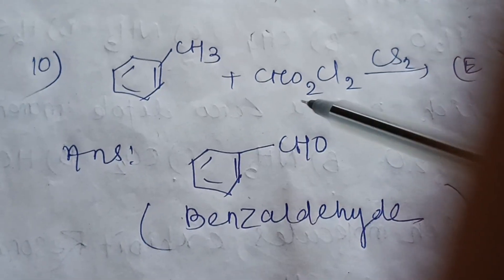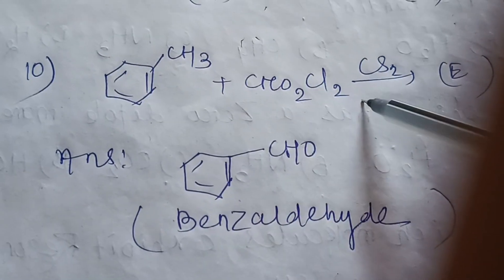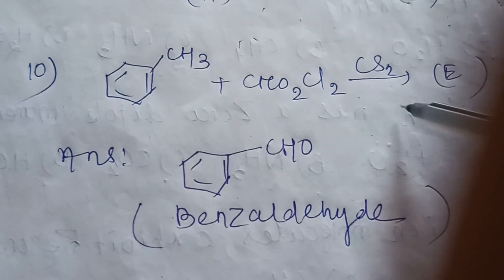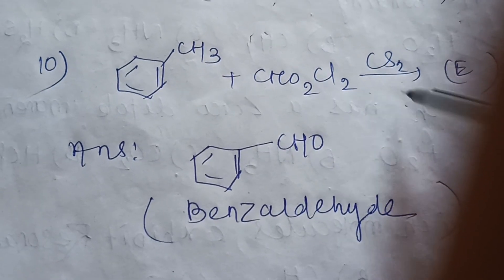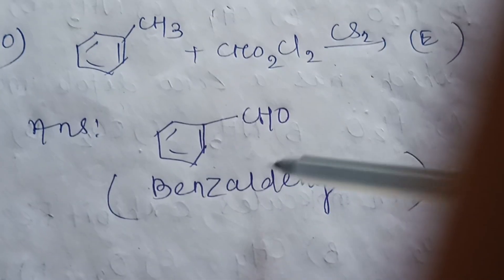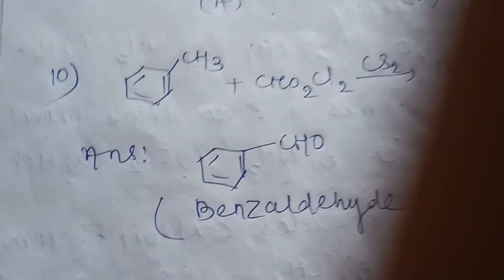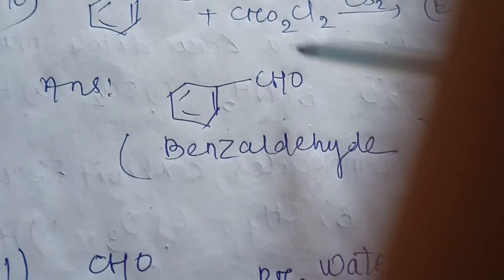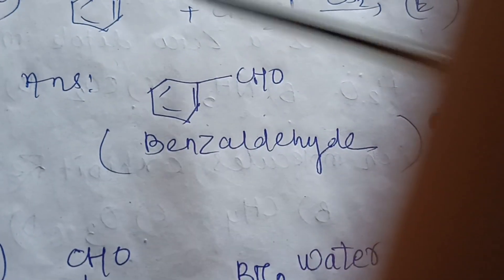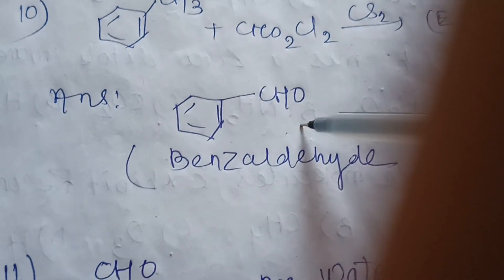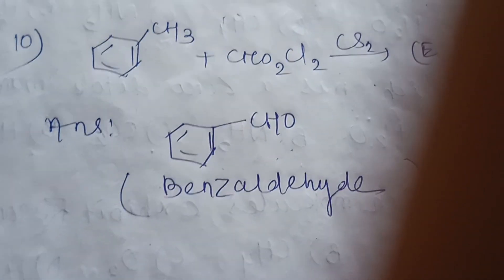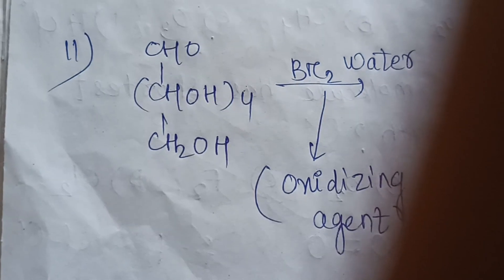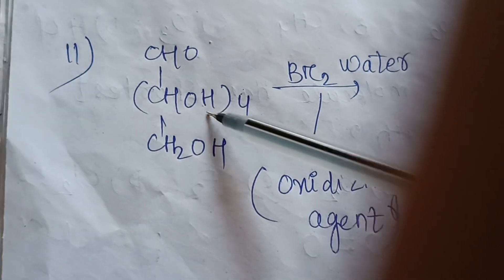Question number 11: toluene reacts with CrO2Cl2 in the presence of carbon disulfide. This is the Etard reaction — a name reaction. The product is benzaldehyde, which is a partial oxidation of toluene to benzaldehyde. This is the Etard reaction.